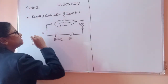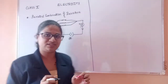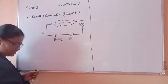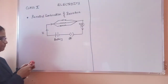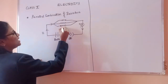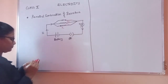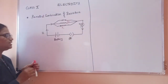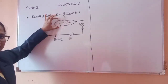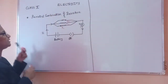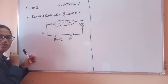We will also have a voltmeter to measure the potential difference. Let us name these as R1, R2, and R3. As the resistors are connected parallelly across two ends of the wire, here you can see there are only two ends.